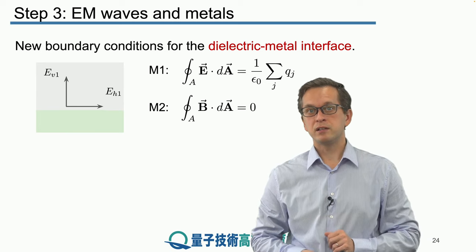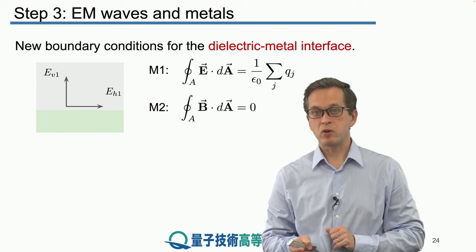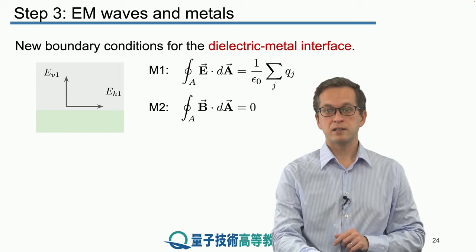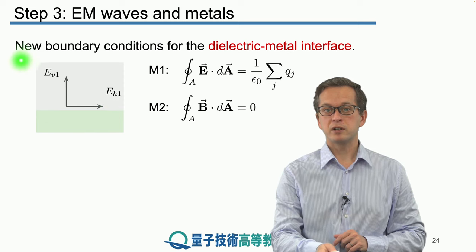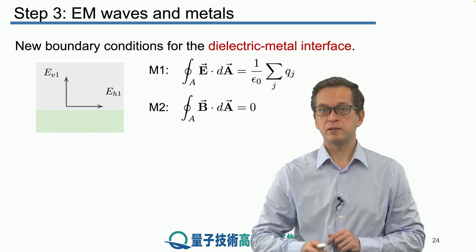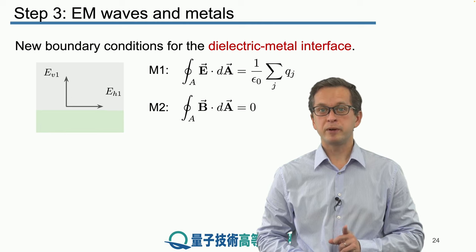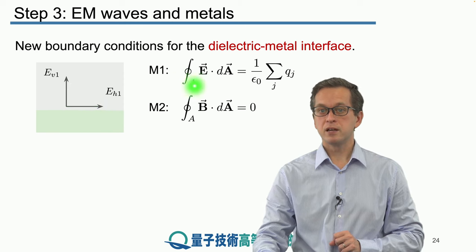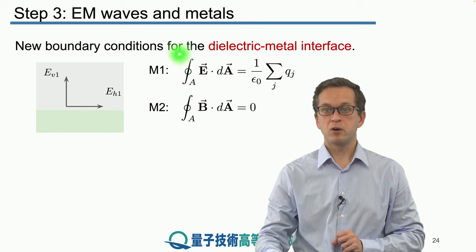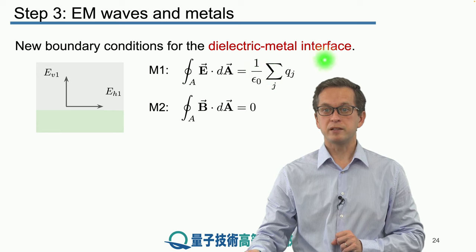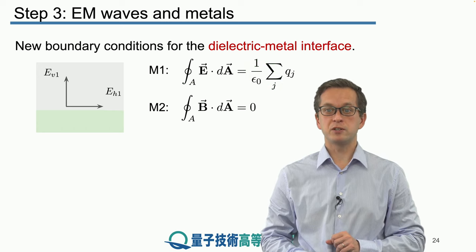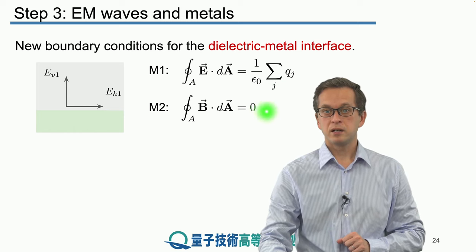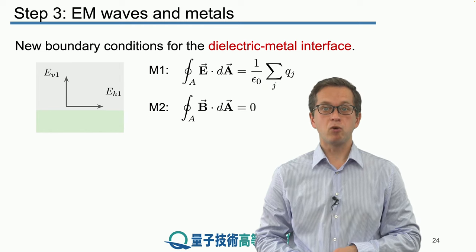Again, our incident electric field has some vertical component and some horizontal component. We leave this index 1 to represent the fact that it's in the upper half of our picture before it enters the metal or interacts with the metal. We will start by considering the first two Maxwell equations. To remind you, they are given as this. The flux through a surface of an electric field is given by this expression here. It's just the sum of all free charges divided by the permittivity of free space.